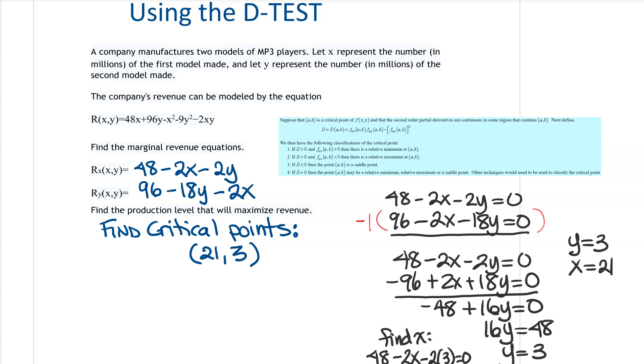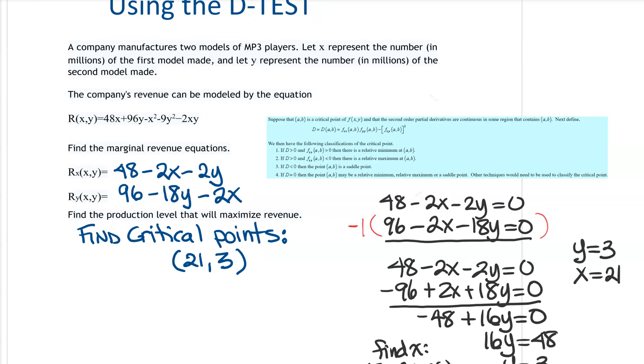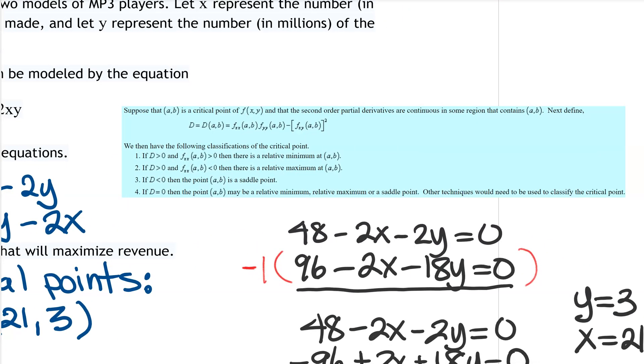So then what we want to do, after we get our critical point, we're going to run this D-test. So let me enlarge this here so you can have a little better look at it. So we get our critical point, and then we're going to find the value of D. And this all depends on getting our second derivatives and plugging in our critical point into those second derivatives.